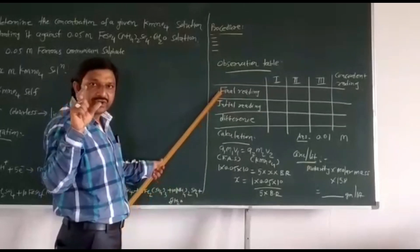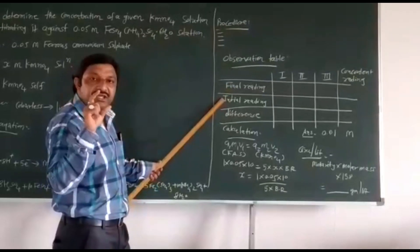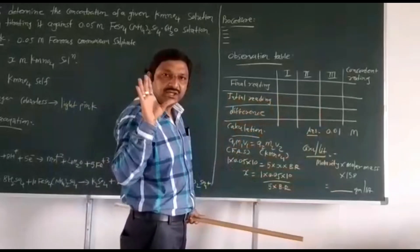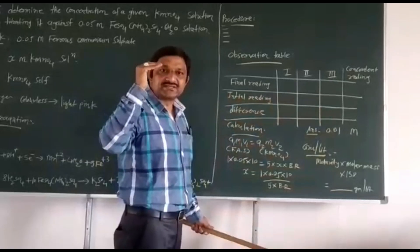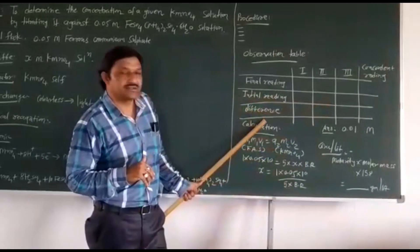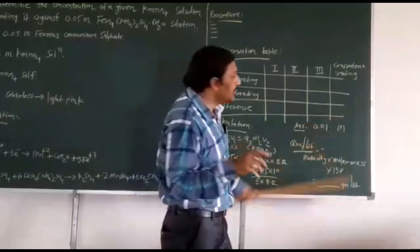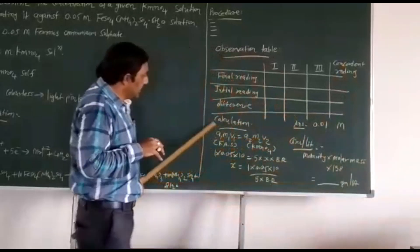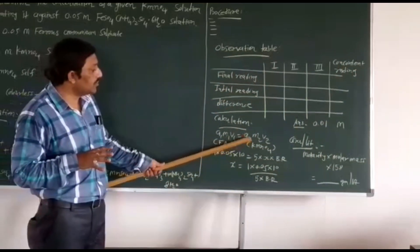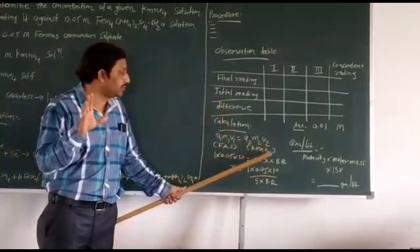Here is your final reading — that means your burette reading. Initial reading is 0.0. You have to set your burette at zero scale. After taking three readings, you have to take the concordant reading. Here is your calculation formula: A1M1V1 = A2M2V2.